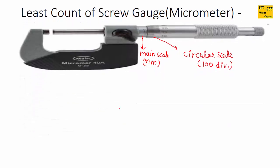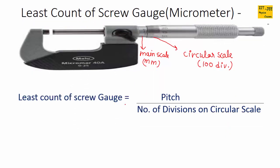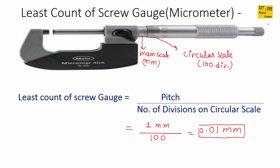To find the least count of the screw gauge, we use the formula: least count = pitch divided by number of divisions on the circular scale. For almost all screw gauges, the pitch of the main scale is 1 millimeter, and the circular scale has 100 divisions, giving us a least count of 0.01 millimeter.